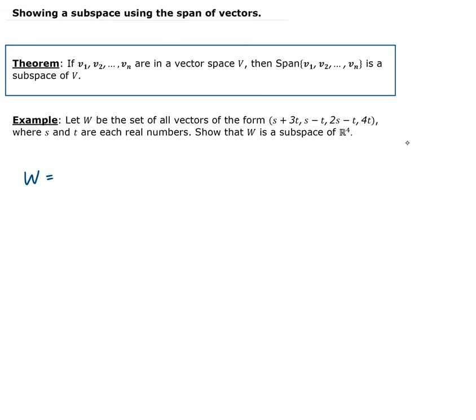So we have that W is equal to S plus 3T, S minus T, 2S minus T, and 4T, where S and T are real numbers.